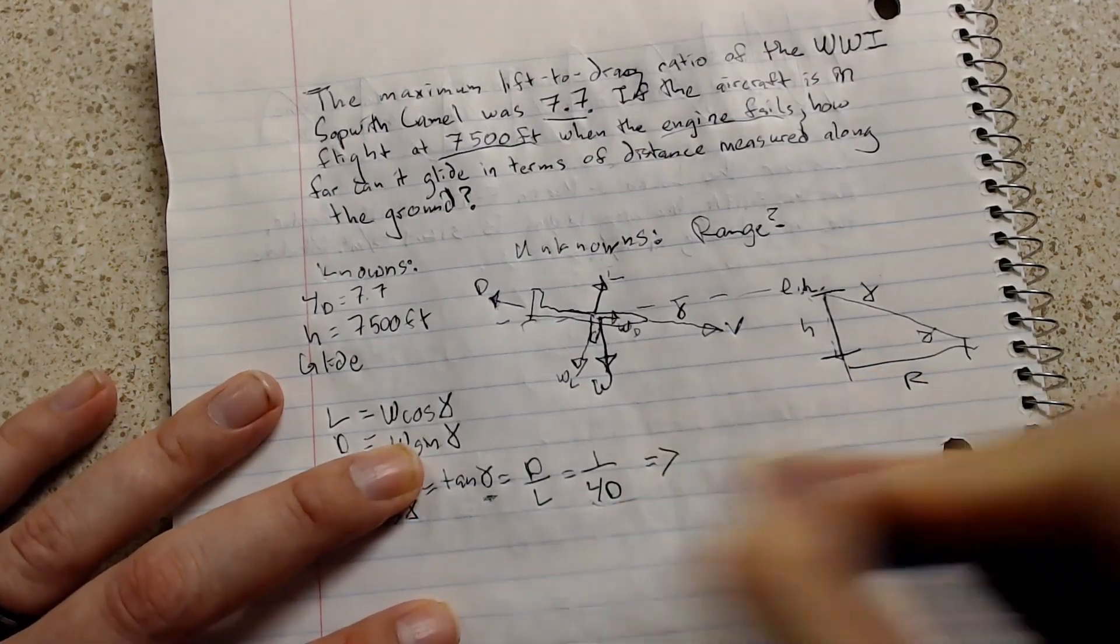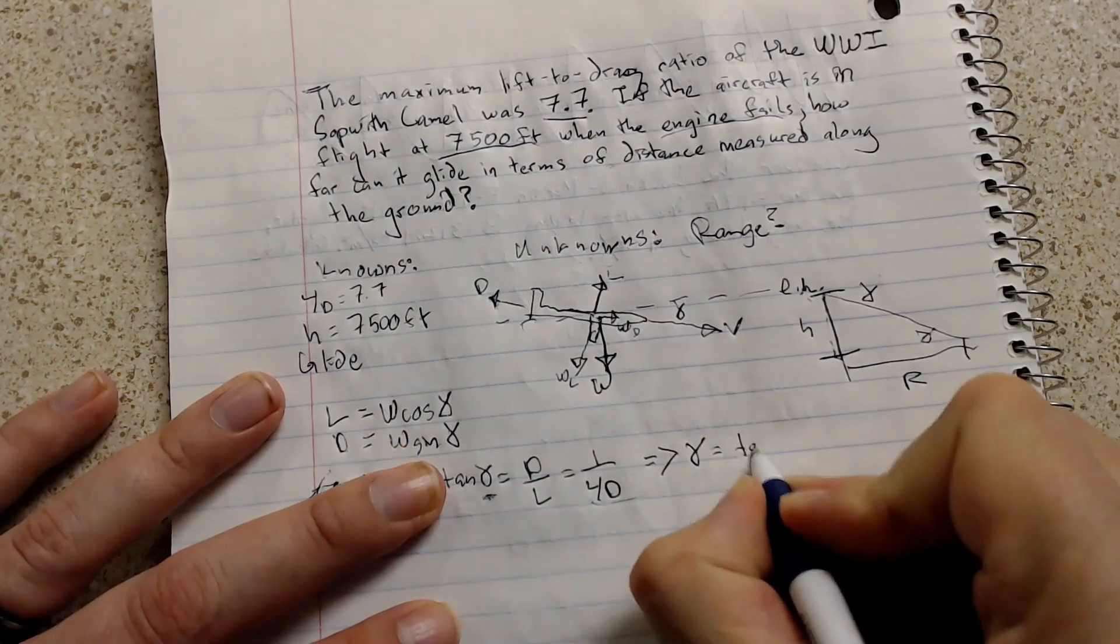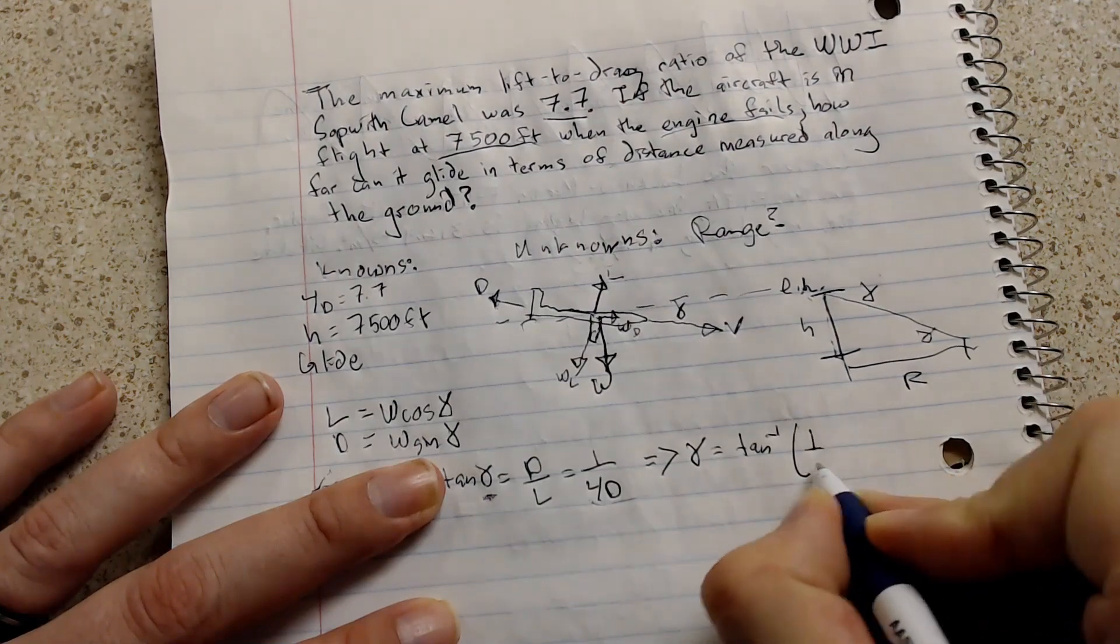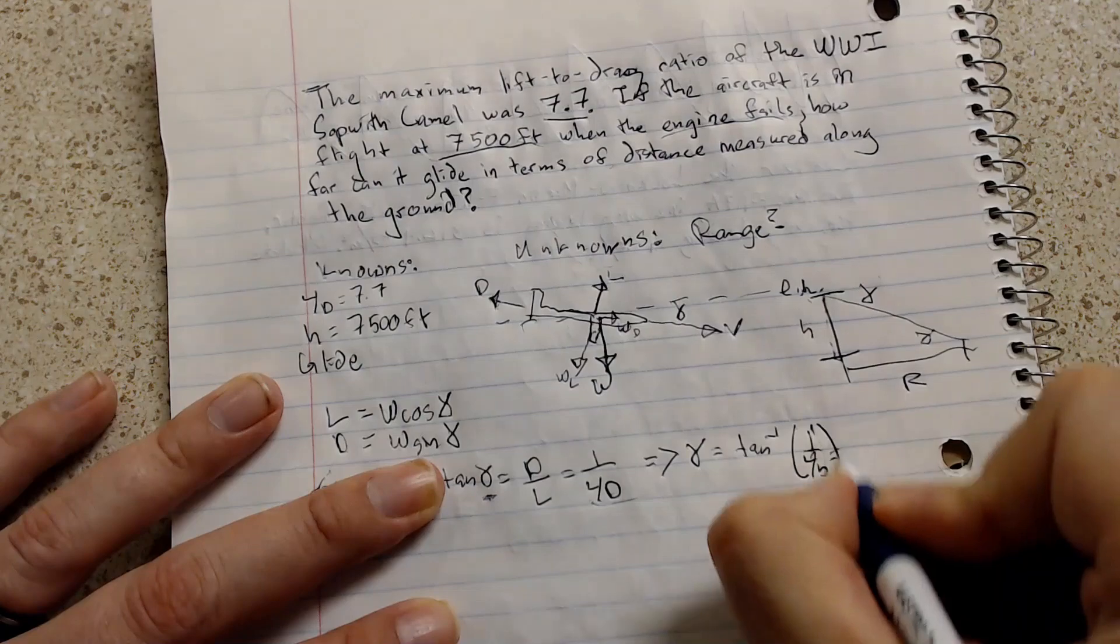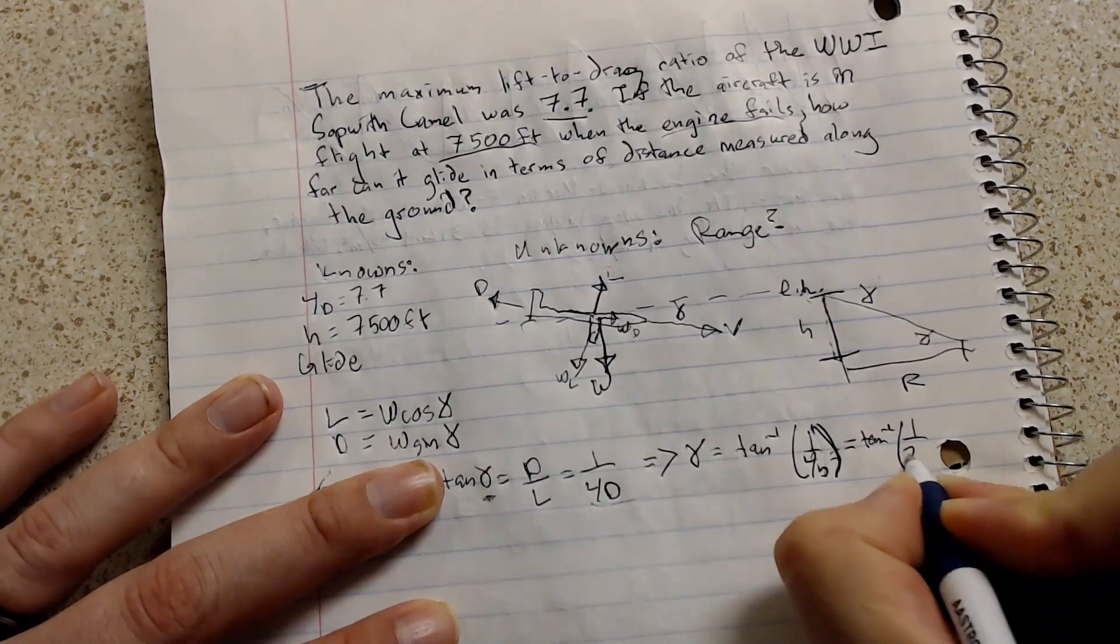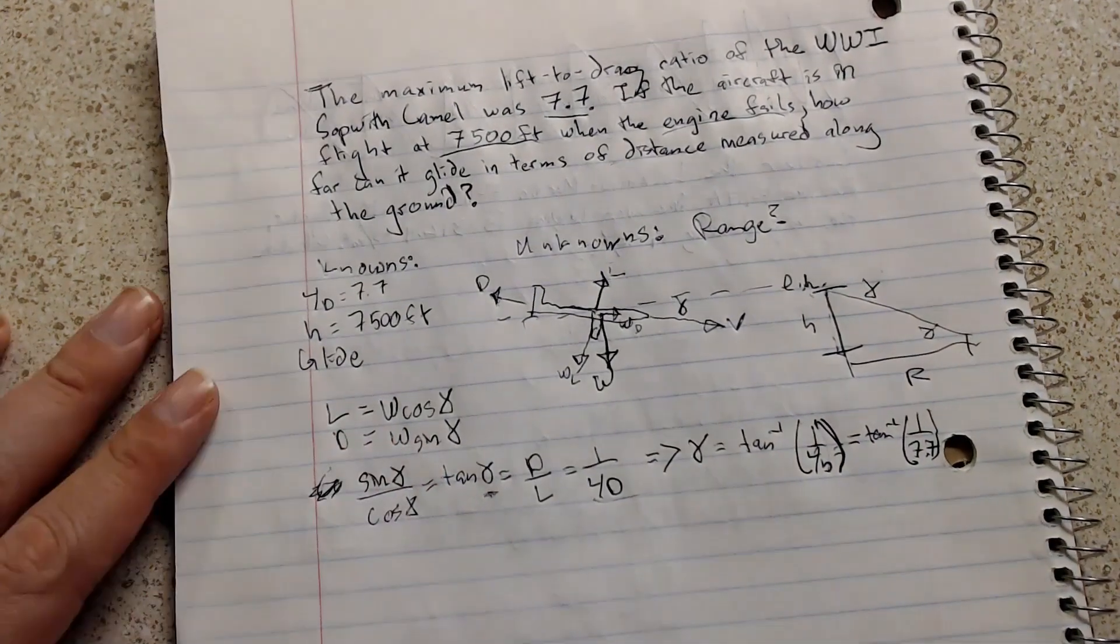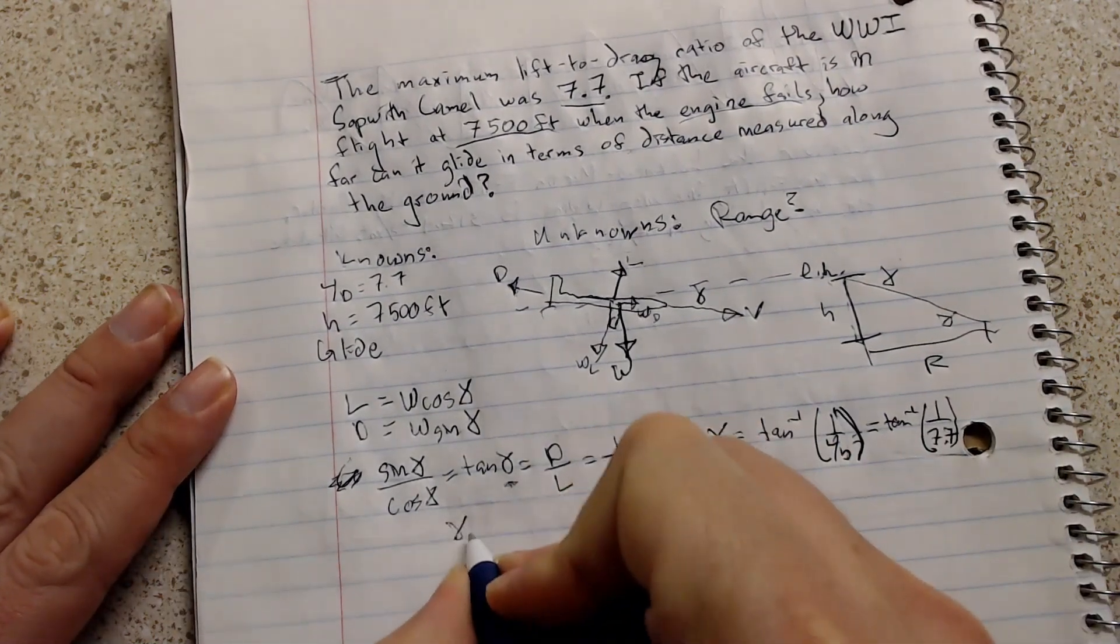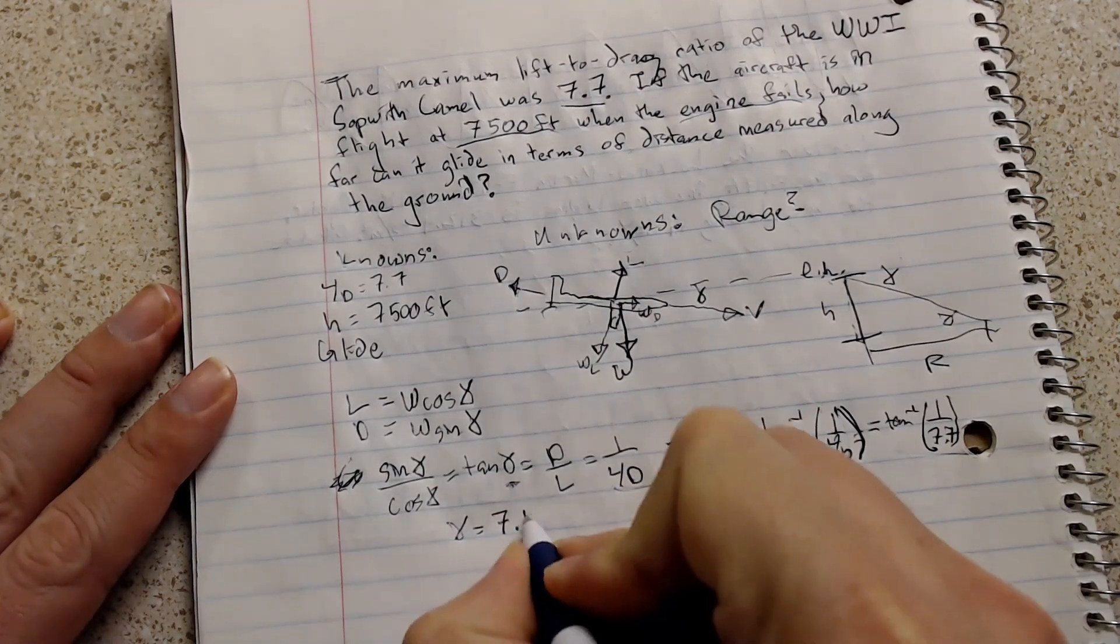So rearranging this equation, the flight path angle is equal to tan inverse of 1 over lift to drag, which equals tan inverse of 1 over 7.7. Now, if you plug this into your calculator, you're going to get a flight path angle of 7.4 degrees.